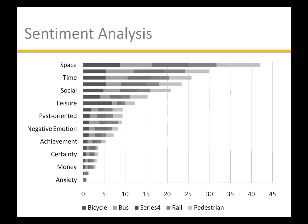Looking at the simple sentiment analysis by mode, bicycling is associated with positive sentiment while automobiles and buses are 50-50 or slightly negative. But with the LIWC software we see more nuance: when people talk about bicycling, they're talking about it in the context of leisure — not necessarily commuting. When people talk about automobiles and buses, they're talking about it in real time and space — they may be stuck in traffic and tweeting about it. This suggests we should reconfigure the analysis to separate comments about commuting and see if a different sentiment pattern appears.